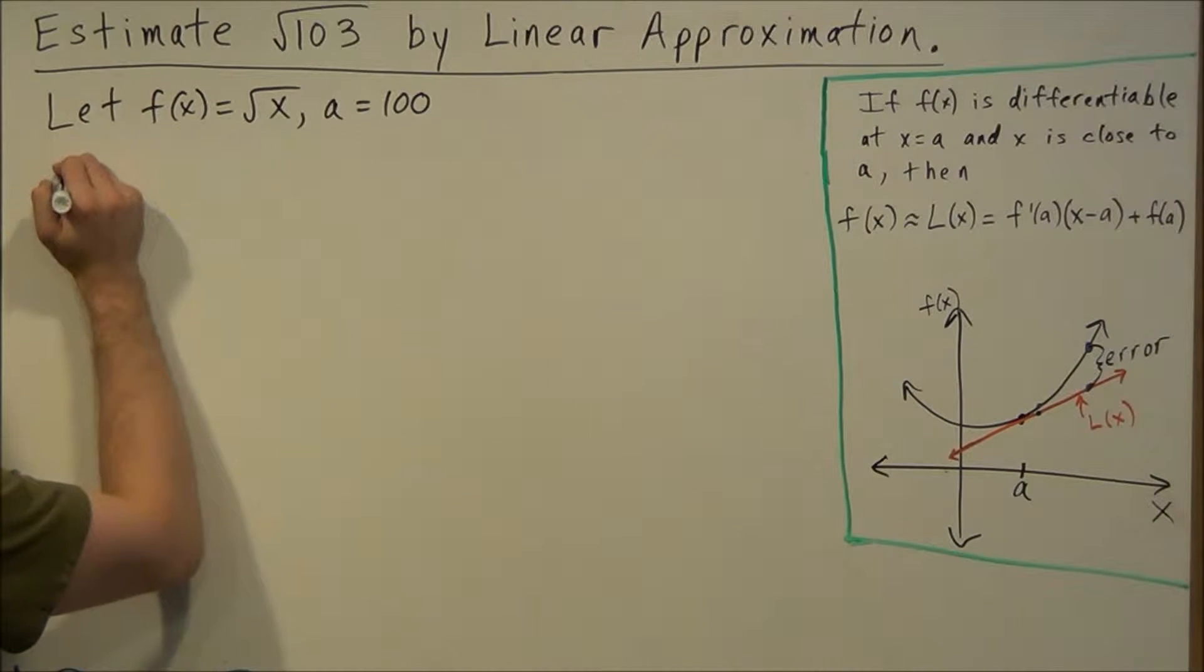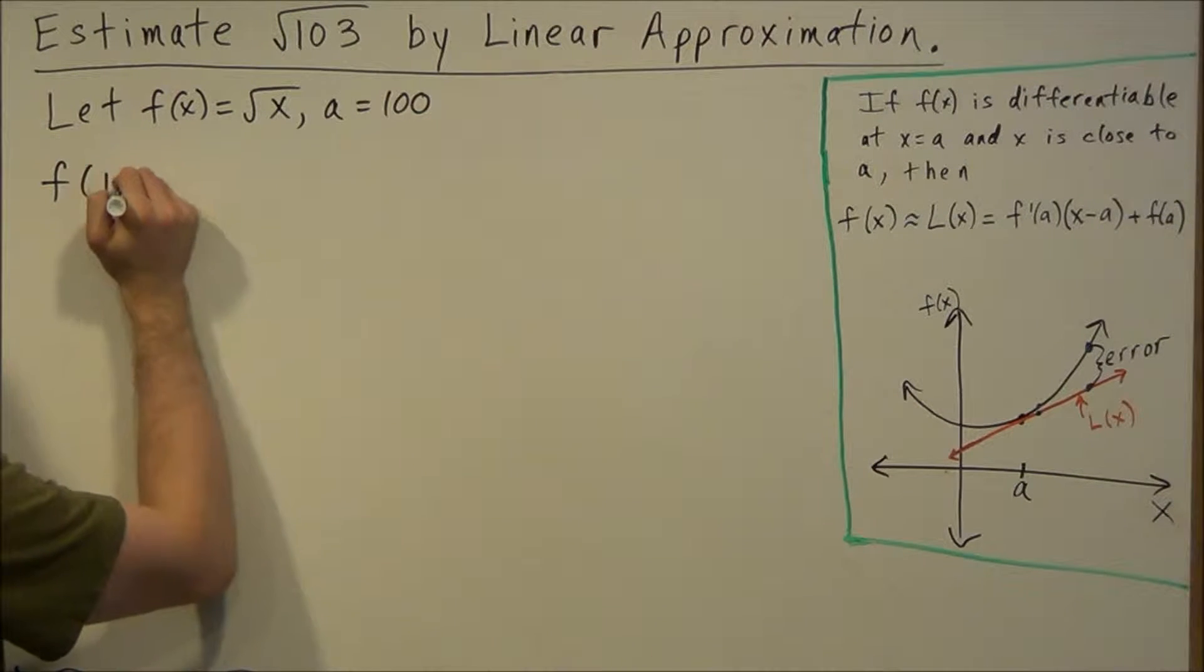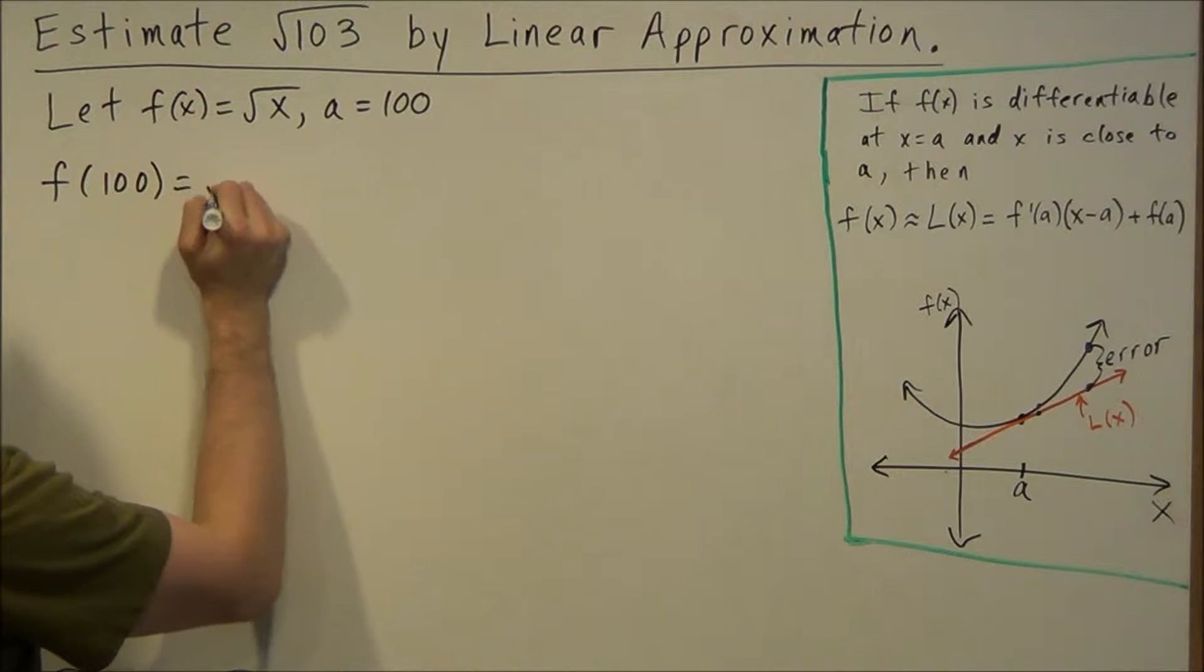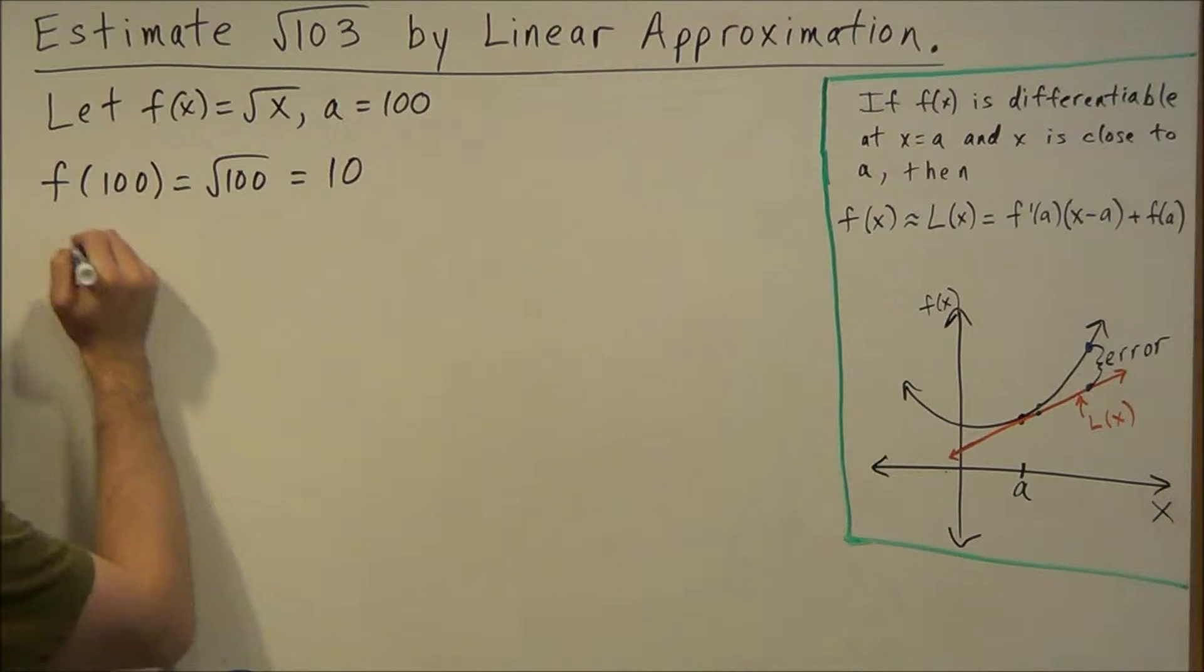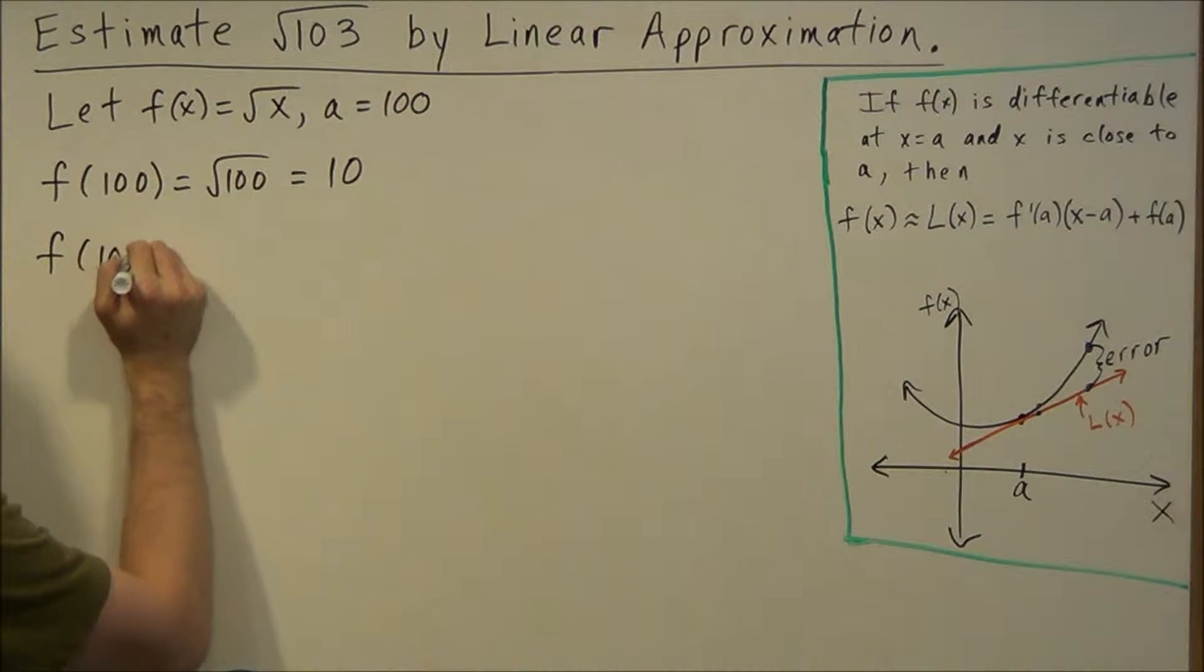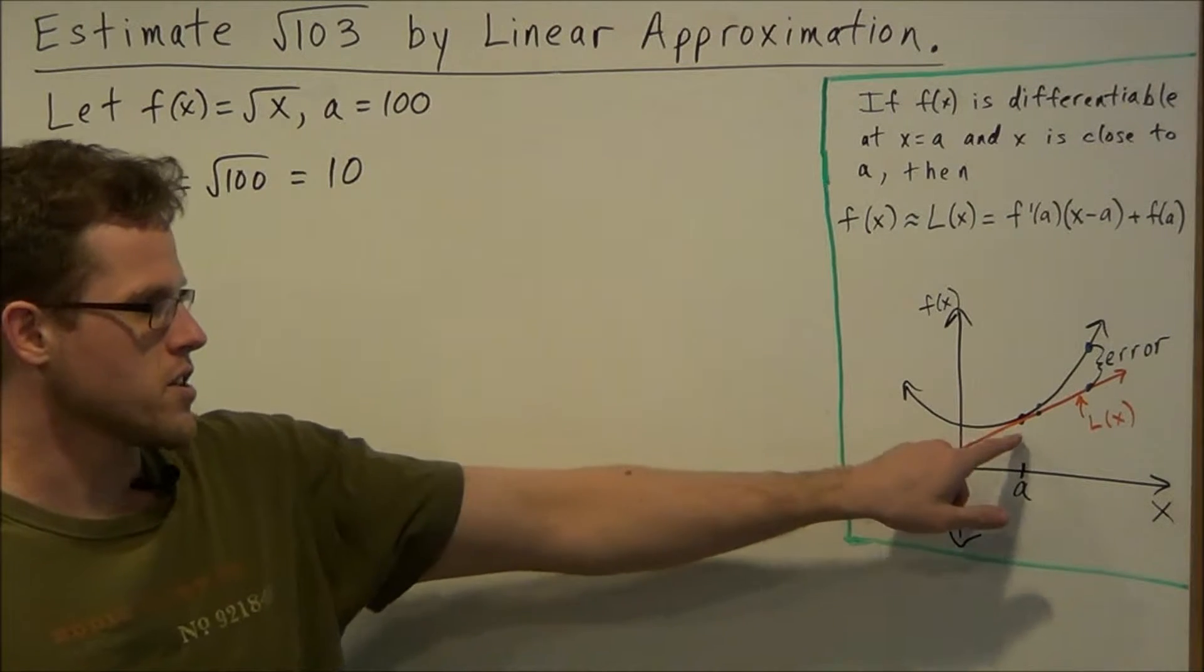So what we need to find then is the function value at 100, which gives us square root 100, which is equal to 10. So this tells us the point that we're going to use for our tangent line.